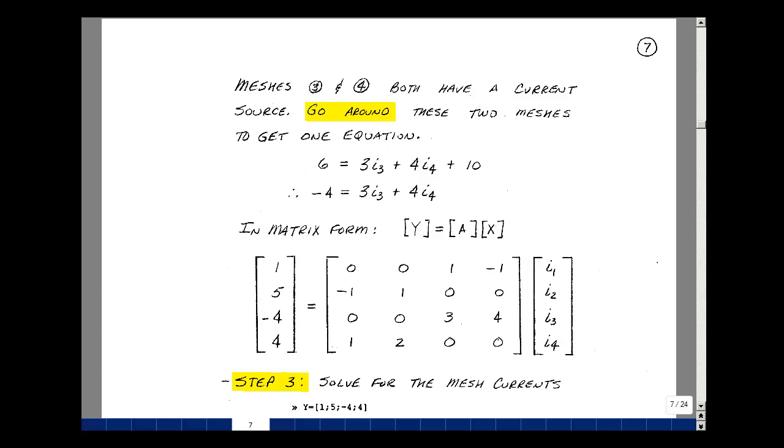You can put them together in any order you want. Our second equation we had: 1 was equal to 1 times I3 minus 1 times I4. The first equation we had was 5 was equal to minus I1 plus I2.